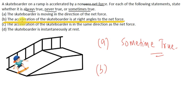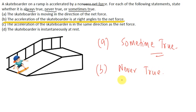For part B, it says the acceleration of the skateboarder is at a right angle to the net force. This is never true, because from Newton's second law of motion the acceleration is always in the direction of net force.